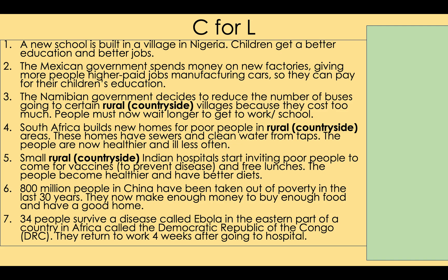For each statement, decide: is it development or isn't it? Number one: yes — life is getting better. Number two: yes. Number three: no — they've reduced the number of buses, so quality of life got worse. Number four and five: yes. Number six: yes — many more people are out of poverty. Number seven: people survive Ebola and return to work four weeks later — no, it isn't development; the government has not improved people's lives.